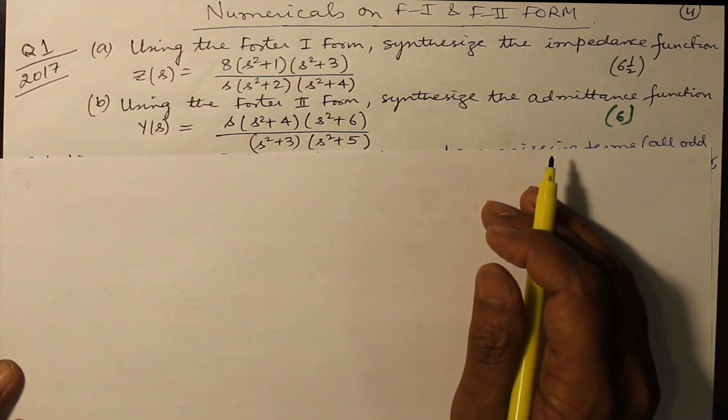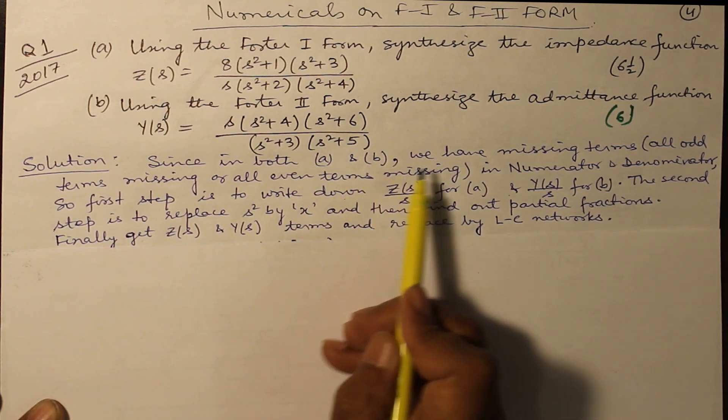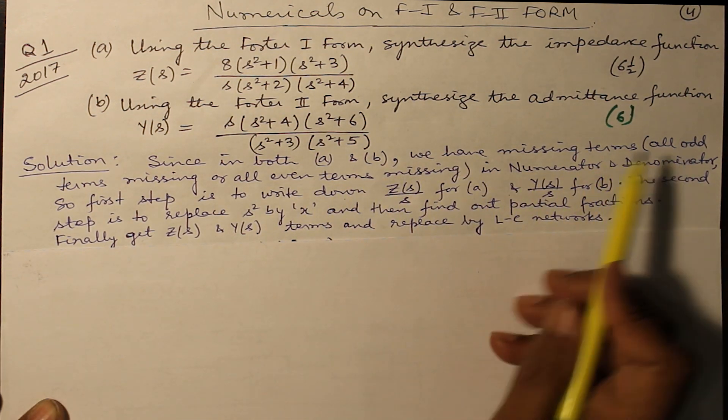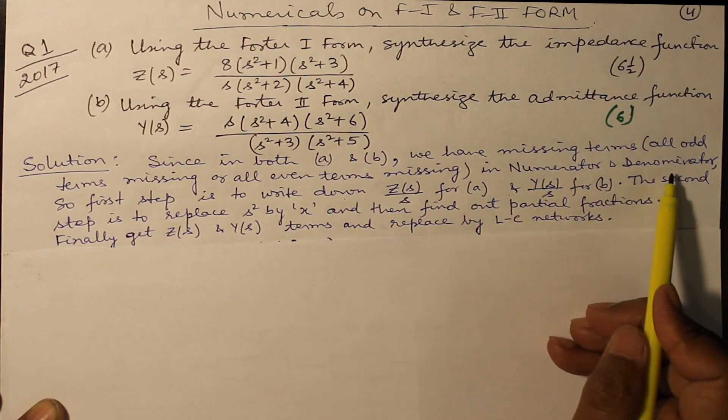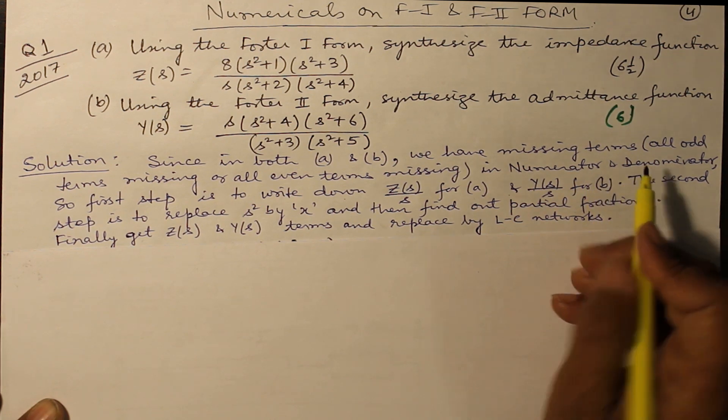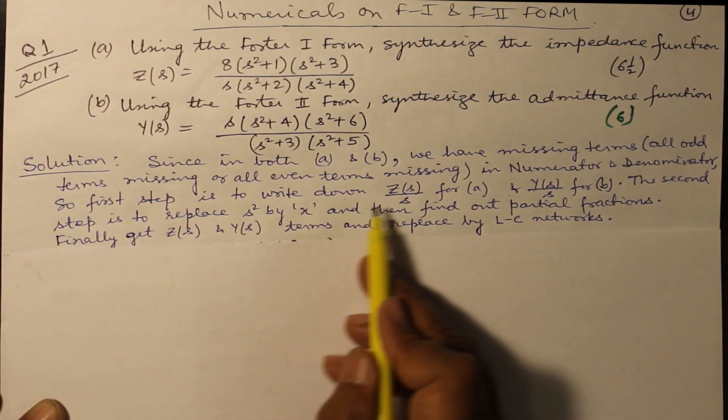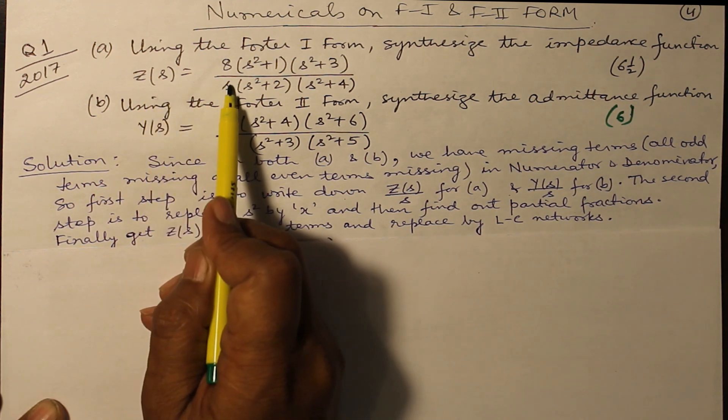Now let's check out how to solve this question. Since in both A and B we have missing terms, all odd terms missing or all even terms missing in the numerator or denominator, which we will be later on using as nr and dr. The first step is to write down Z(s) over s. Here you will write Z(s) over s, so this will become s². For A and Y(s) over s for B. So when you write down Y(s) over s, this becomes s² here.